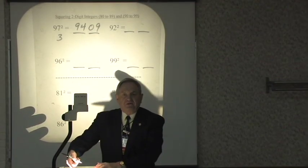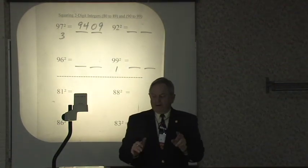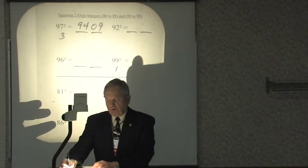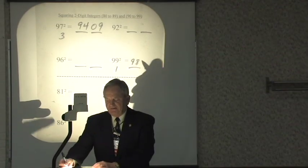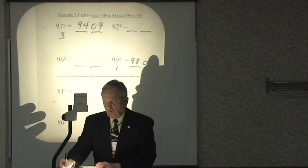The difference between the given number and 100 is 1. We do two things with the 1, like we did over here. The first thing we do with the 1 is we subtract it from the given number. 1 from 99 is 98. The second thing we do with the 1 is square it. 0,1. 9,801.